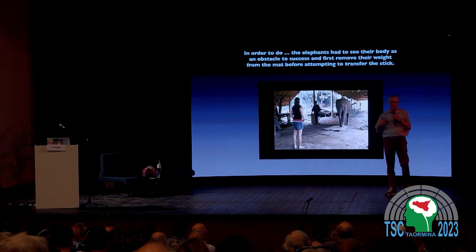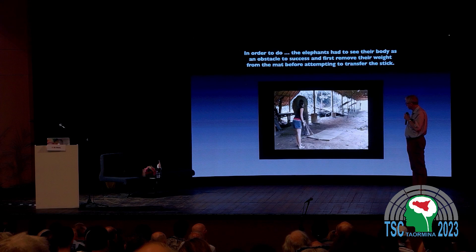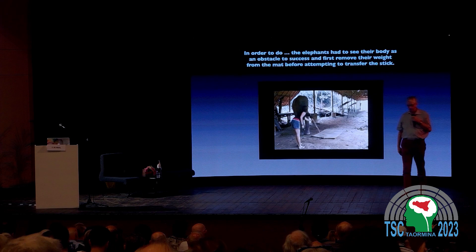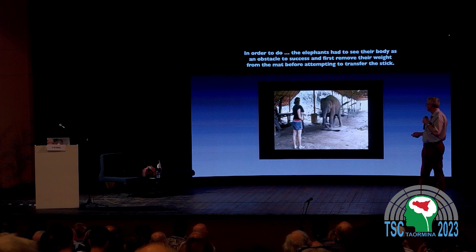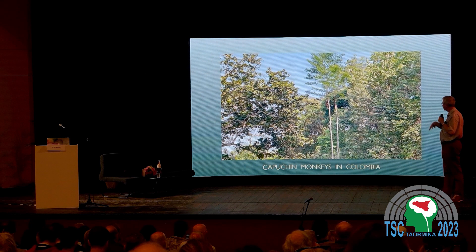This is an elephant body-awareness test done in Thailand. The elephant steps on a platform and needs to give a stick to a human to get food, but cannot give the stick if it stays on the platform. So the elephant has to realize that its own body is blocking it and step out of the way — and that's what the elephant does. This test has also been done with children. These are alternative tests that researchers are now developing, including olfactory tests to assess self-awareness in different ways.